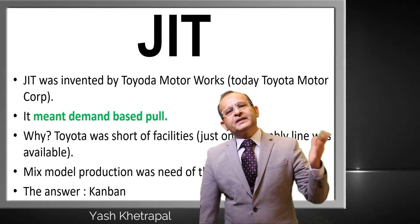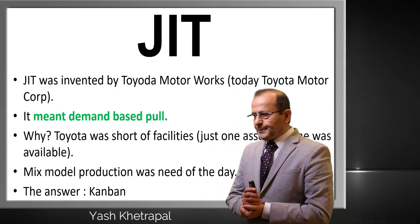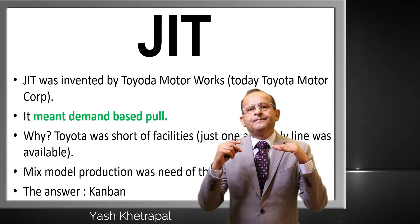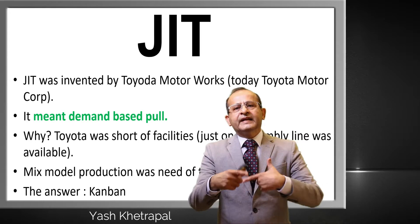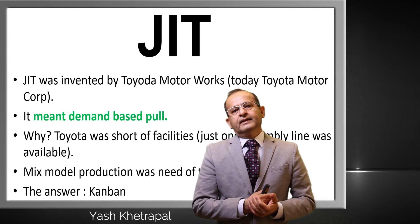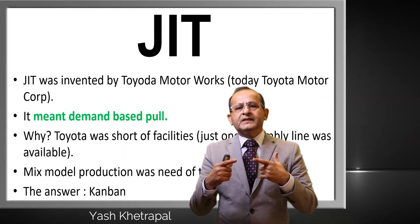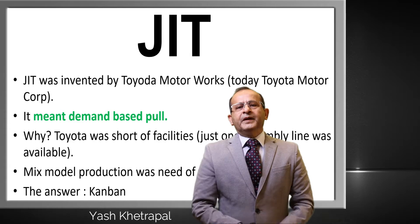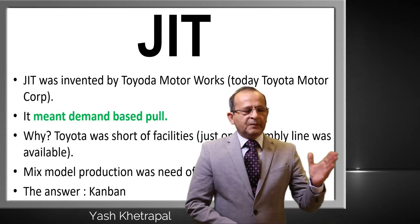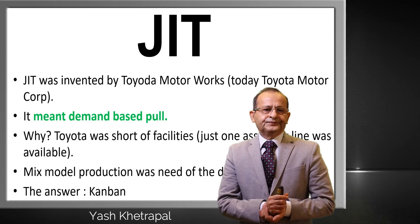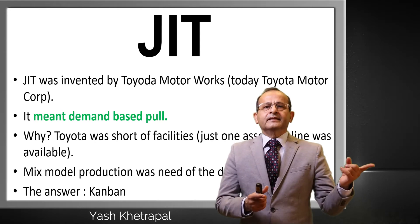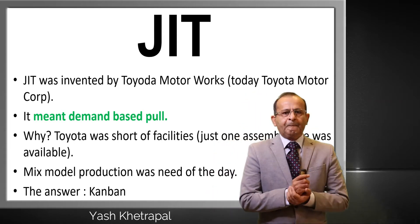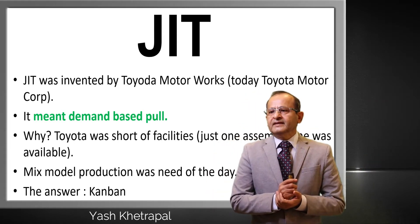Demand-based pull. How to achieve that? There is some opening inventory in the system. As consumption takes place, we send a signal to the supplier — my supplier could be a previous process or an outside vendor. We send a signal and either the previous process or the supplier gives you material. How do we achieve that?